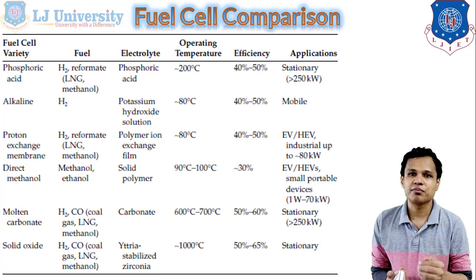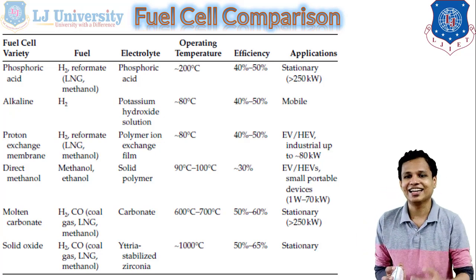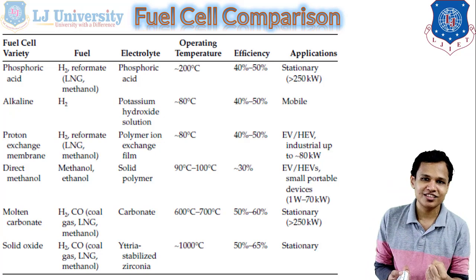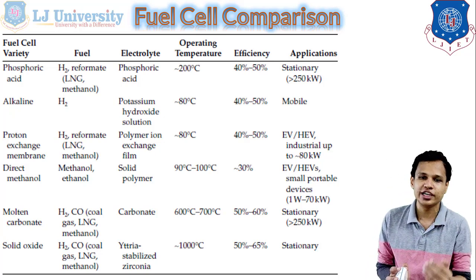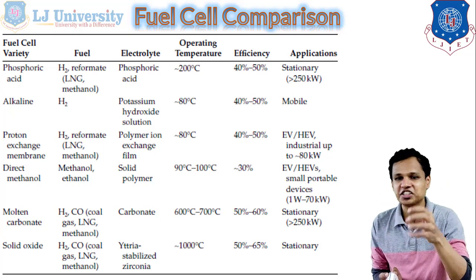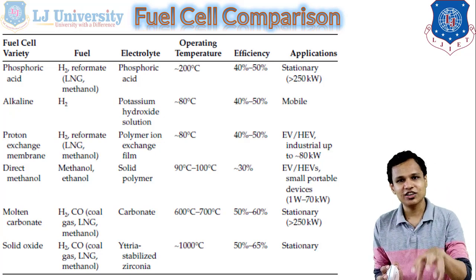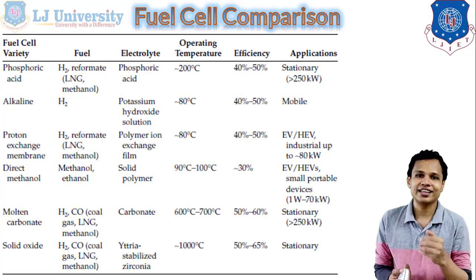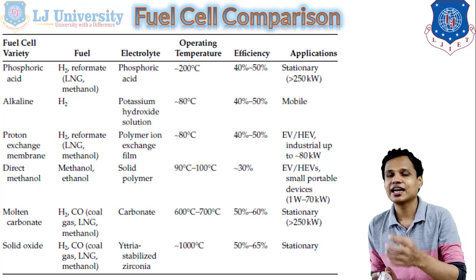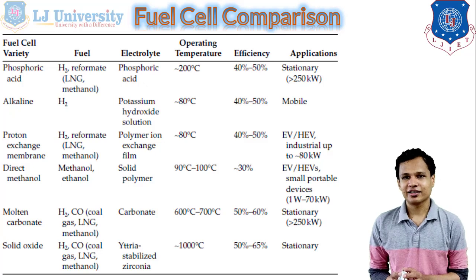The proton exchange membrane fuel cell is the best fuel cell we can use right now for electric and hybrid electric vehicles. Next is the direct methanol fuel cell, where the fuel used is methanol rather than hydrogen. The electrolyte is a solid polymer, the operating temperature is 90 to 100 degrees Celsius, and it gives 30% efficiency. The lower efficiency compared to others is because methanol is the source instead of hydrogen. It can be used in electric and hybrid electric vehicles but only for small portable devices.